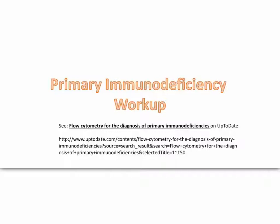I'm going to do the workup on primary immunodeficiencies. I want to start off by saying that there was no single source that you can go to for information on a workup. Working up immunodeficiencies is going to require you to be familiar with a lot of the immunodeficiencies and familiar with the immune system in general. There's a great article on UpToDate called Flow Cytometry for the Diagnosis of Primary Immunodeficiencies. Flow cytometry includes probably a hundred different things and a hundred different ways to diagnose the 150-plus immunodeficiencies that have been documented.